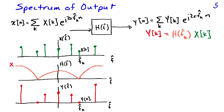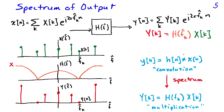The frequency response alters the phase as well, though only amplitude is shown here. The spectrum of the output is the product of the spectrum of the input times the frequency response of the system. In the time domain, the output is the convolution of the impulse response with the input, which is a difficult operation to visualize. In the frequency domain, the spectrum of the output is simply the product of the frequency response times the spectrum of the input — multiplication is very easy to visualize and very intuitive.